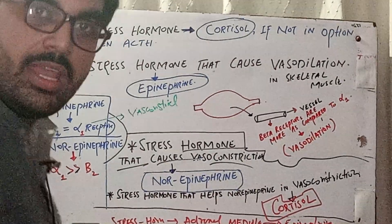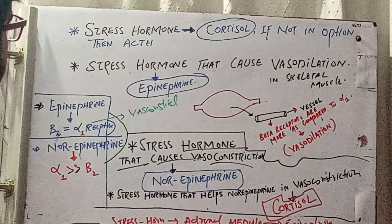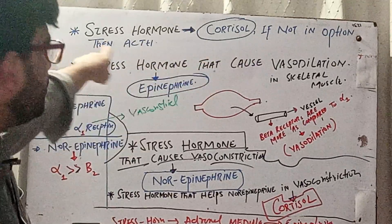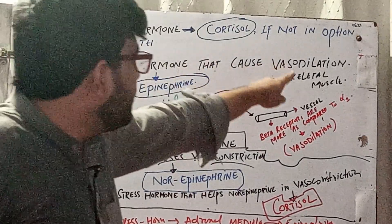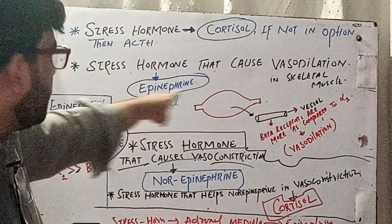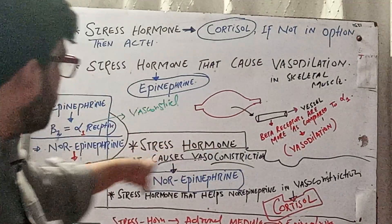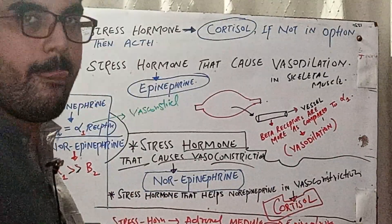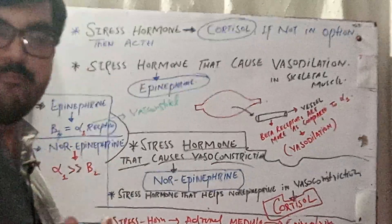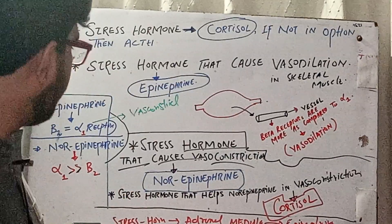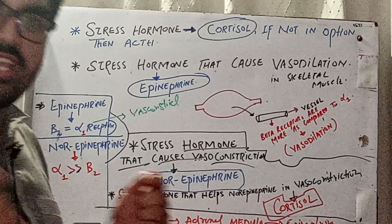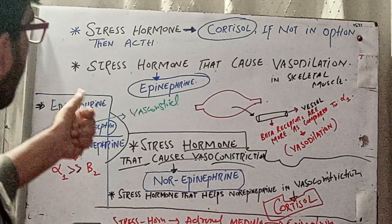Today I'm going to talk about a very important MCQ concept: the stress hormone. The major stress hormone of the body is cortisol; if there is no option, pick ACTH. The stress hormone that causes vasodilation in skeletal muscle is epinephrine — not norepinephrine. The stress hormone that causes vasoconstriction is norepinephrine. The stress hormone released from the adrenal medulla is epinephrine. The stress hormone that is both a hormone and neurotransmitter is norepinephrine, because it acts between neurons.